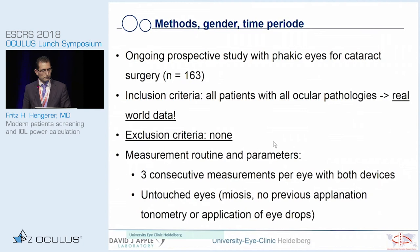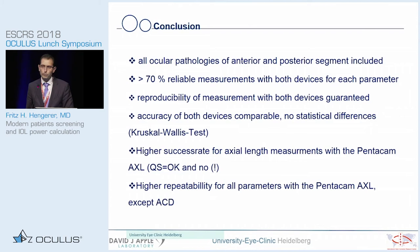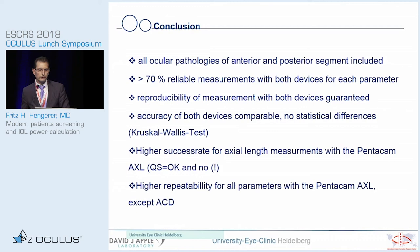In conclusion, we do not need to exclude any ocular pathologies, but we must carefully look at the quality scale and the expectation marker in the IOL Master to define which measurements have the best optical quality. Repeatability of measurements with both devices is perfectly guaranteed. The Pentacam showed a higher success rate for axial length measurements in an average patient selection, and higher repeatability for all parameters, with the IOL Master 700 being slightly superior for anterior chamber depth. Thank you very much for your kind attention.